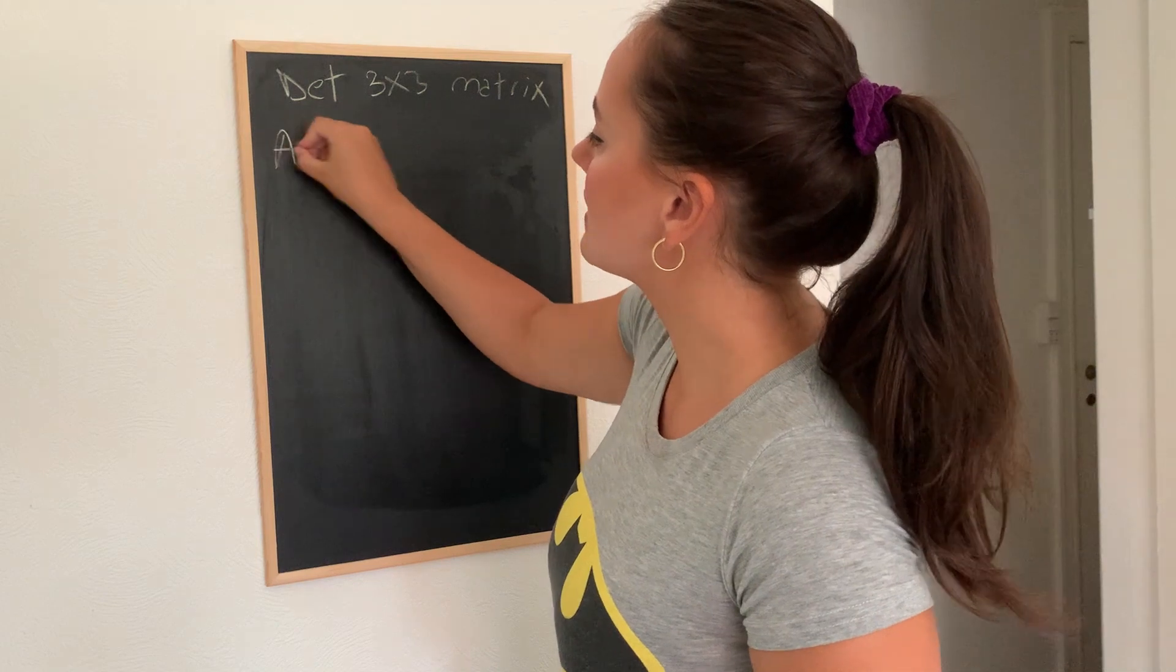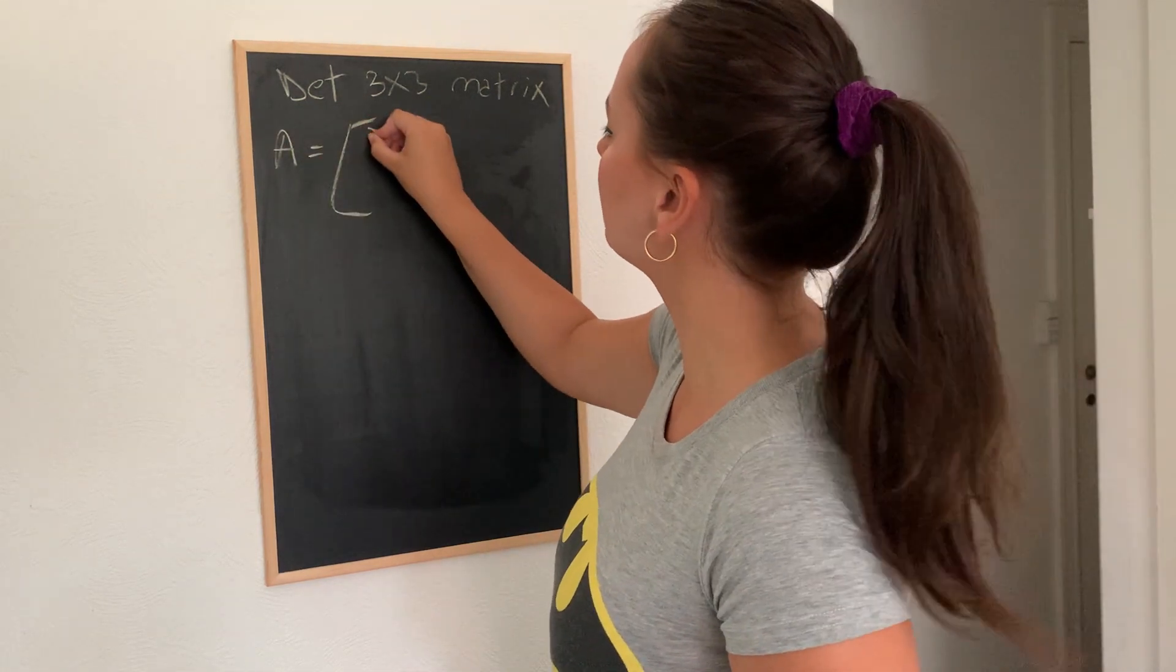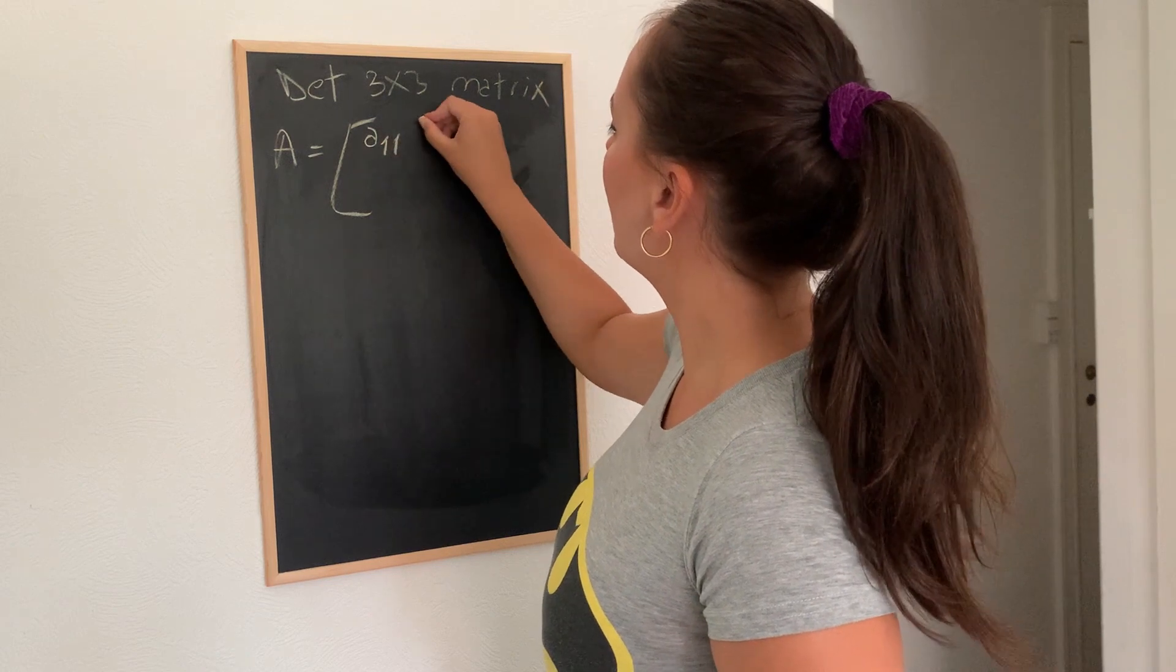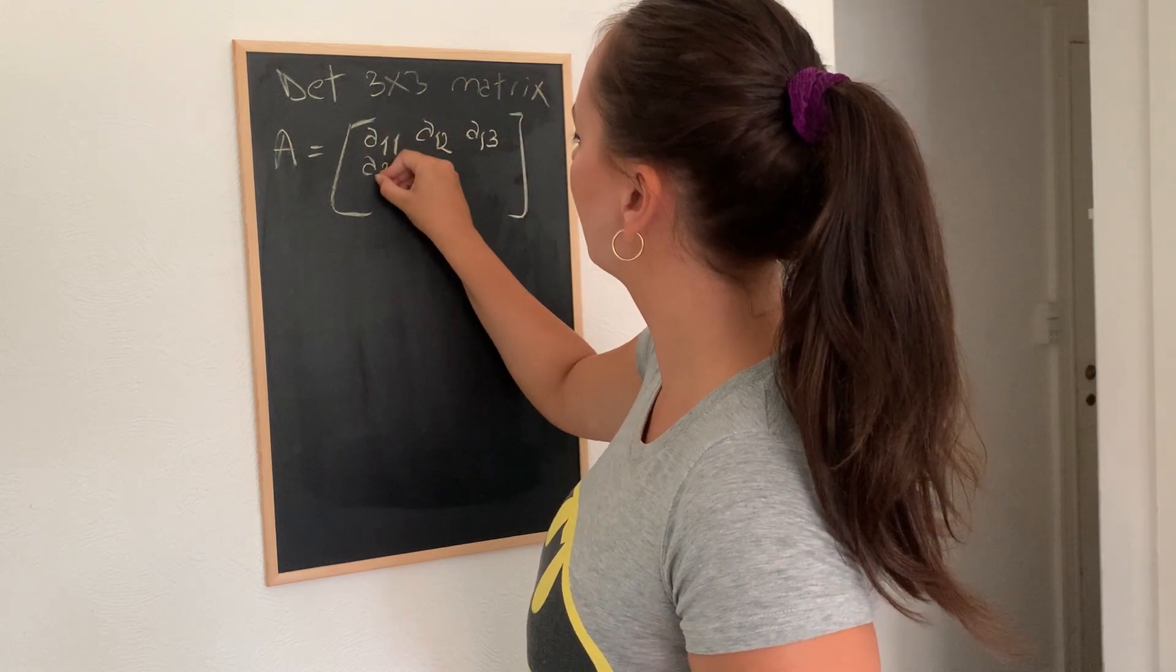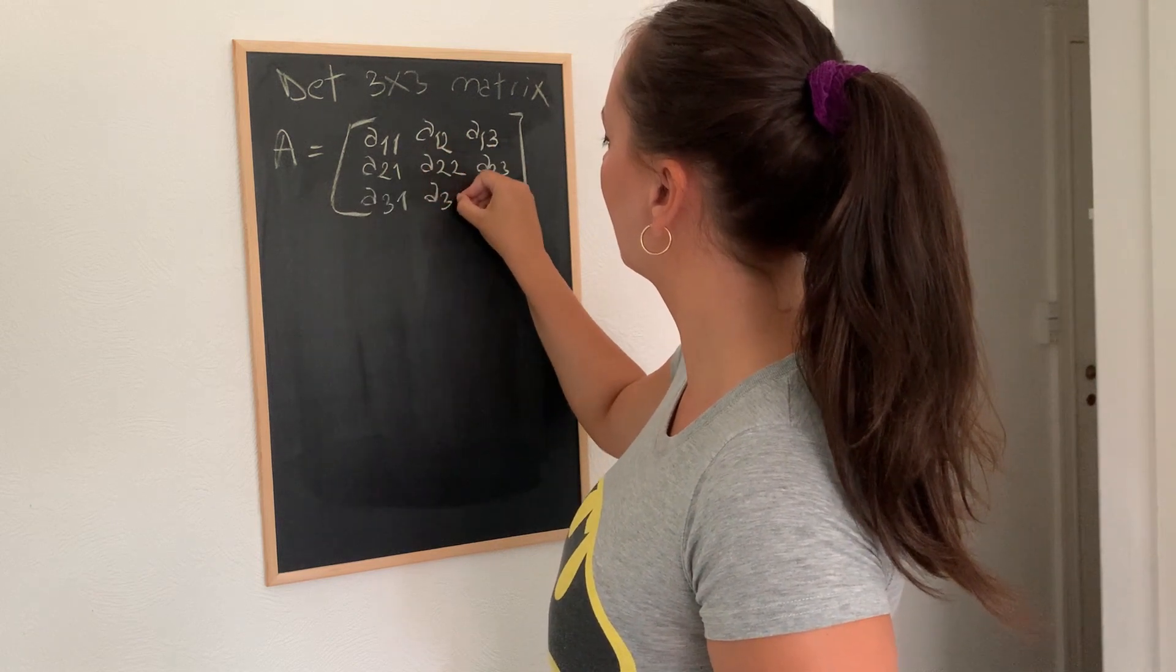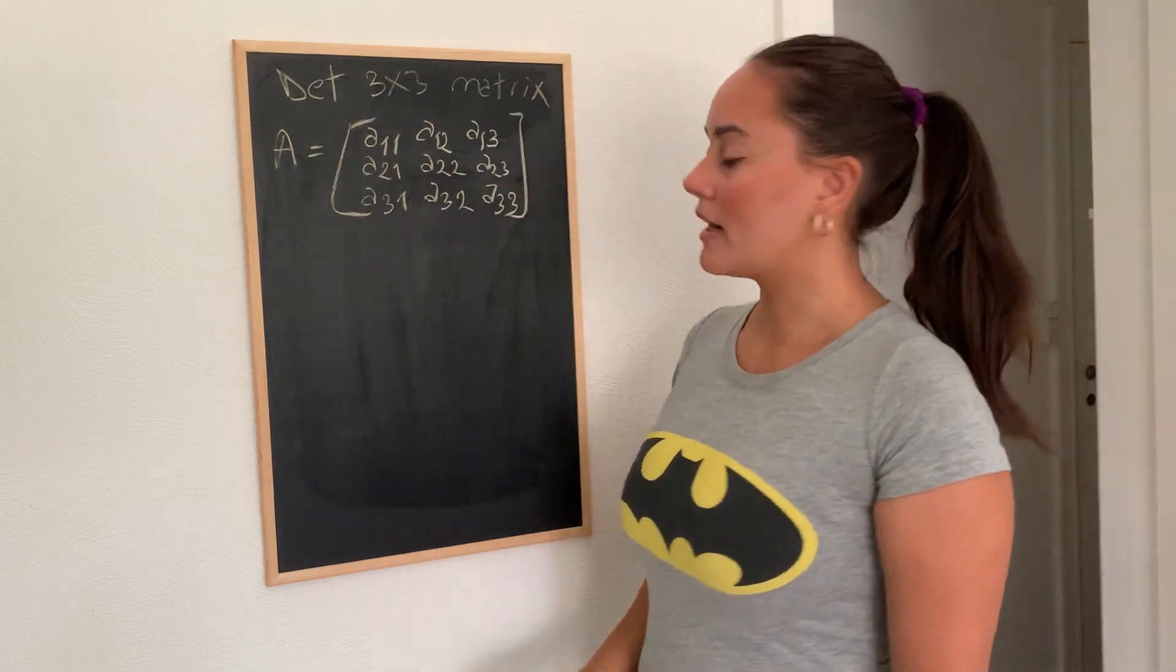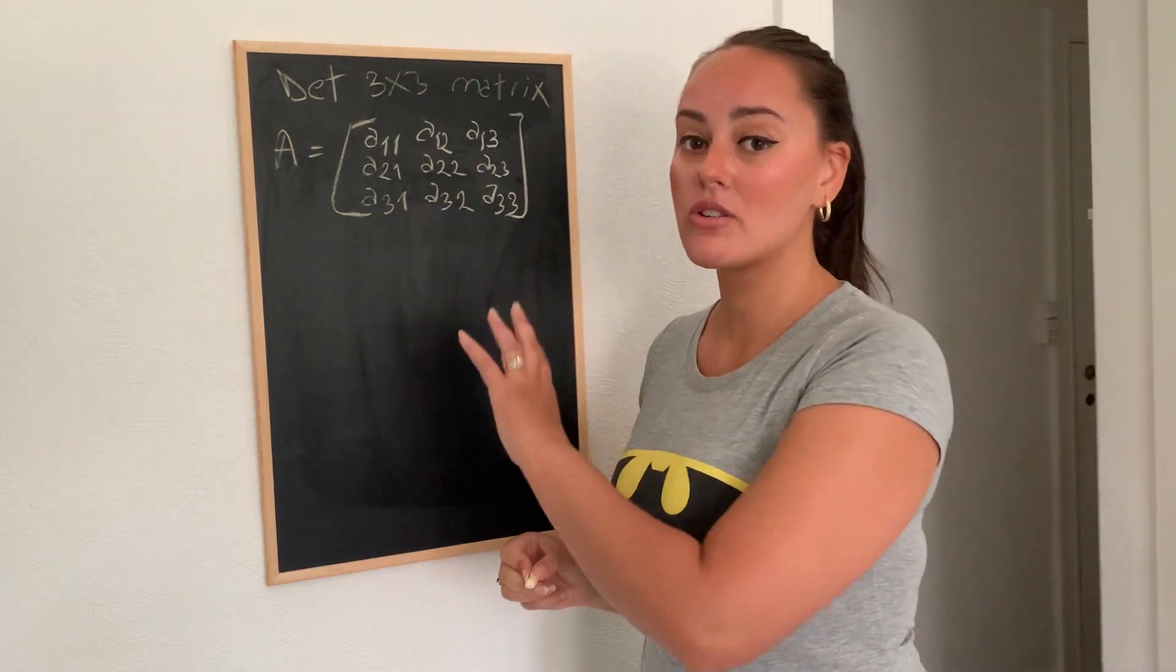So let's say we have matrix A again, and it has the following elements. A1,1, A1,2 and so on. All right. So this is how our matrix looks like.